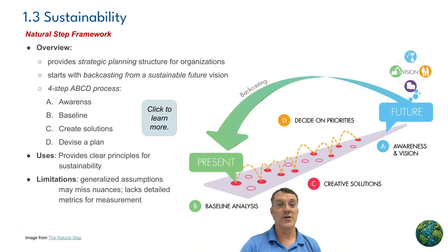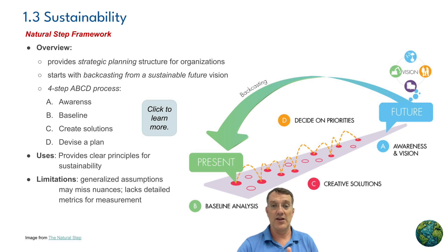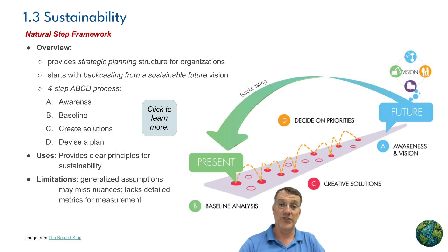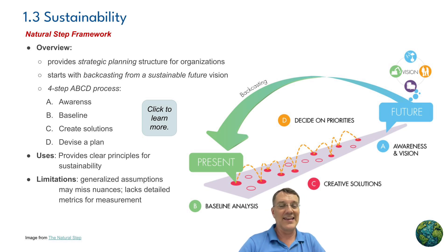Another framework you should look into is the Natural Step Framework. It provides a strategic planning structure for organizations, starting with backcasting from a sustainable future vision. Essentially, we have a vision of where we want to be in the future, look at where we are now, and develop steps to get from where we are to where we want to be. Its uses are that it offers clear principles for sustainability, but its limitations are that it may miss nuances due to generalized assumptions and lacks detailed metrics, making it open to interpretation.